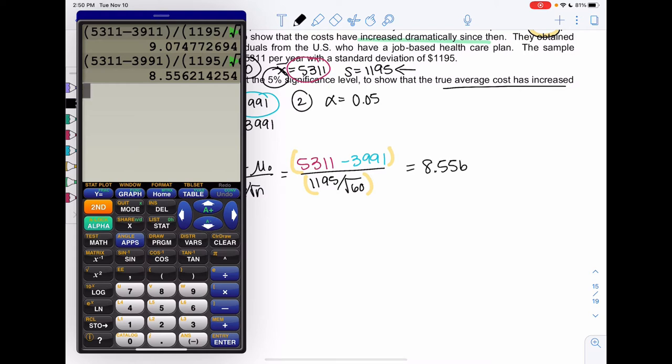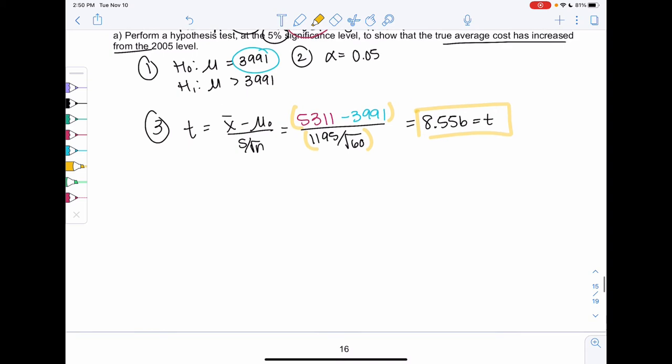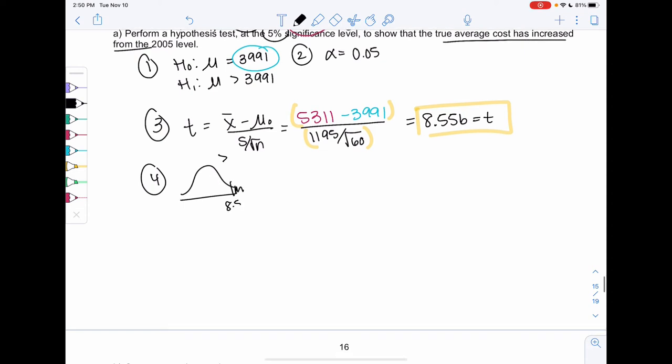This is very, very big. This is way beyond two standard deviations. So I'm probably rejecting, because this is so far beyond two. But let's go ahead and find the p-value to assess the risk. Step four. Since we're doing greater than, we're going to shade to the right. We don't really know where 8.556 is, because it's so far. The p-value is T-CDF. Lower is 8.556, up to infinity, or 10 to the 99. And we just need degrees of freedom.